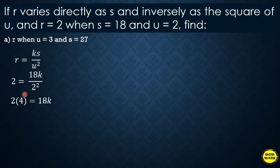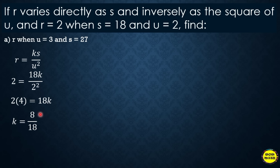So 2 × 4 = 18K, which gives 8 = 18K. Dividing both sides by 18 and reducing to lowest terms by dividing numerator and denominator by 2 gives K = 4/9.